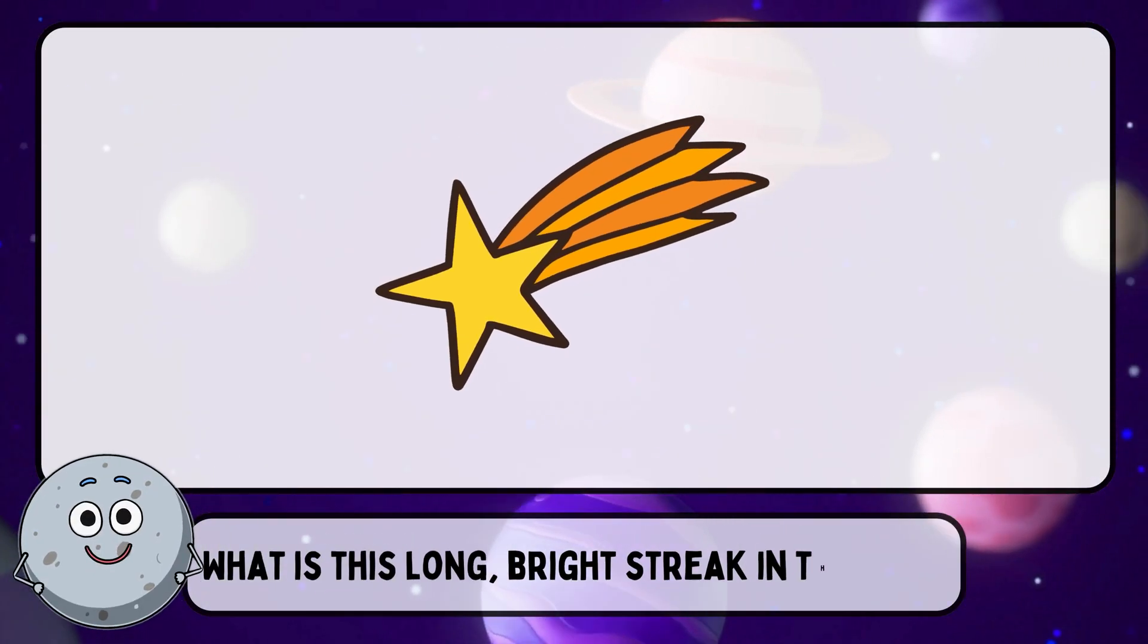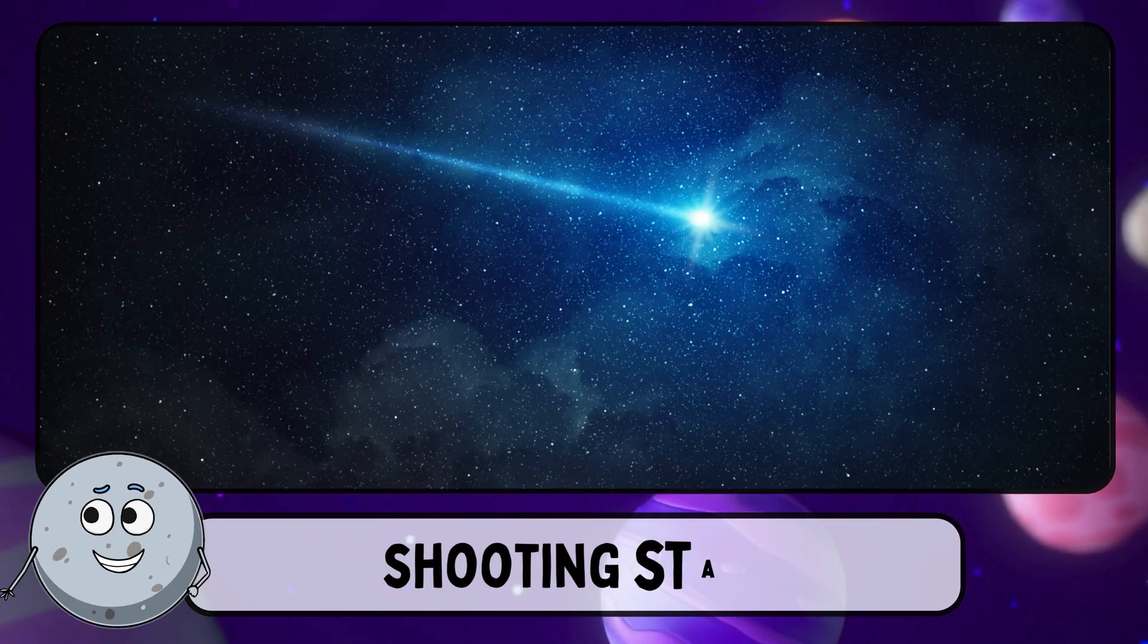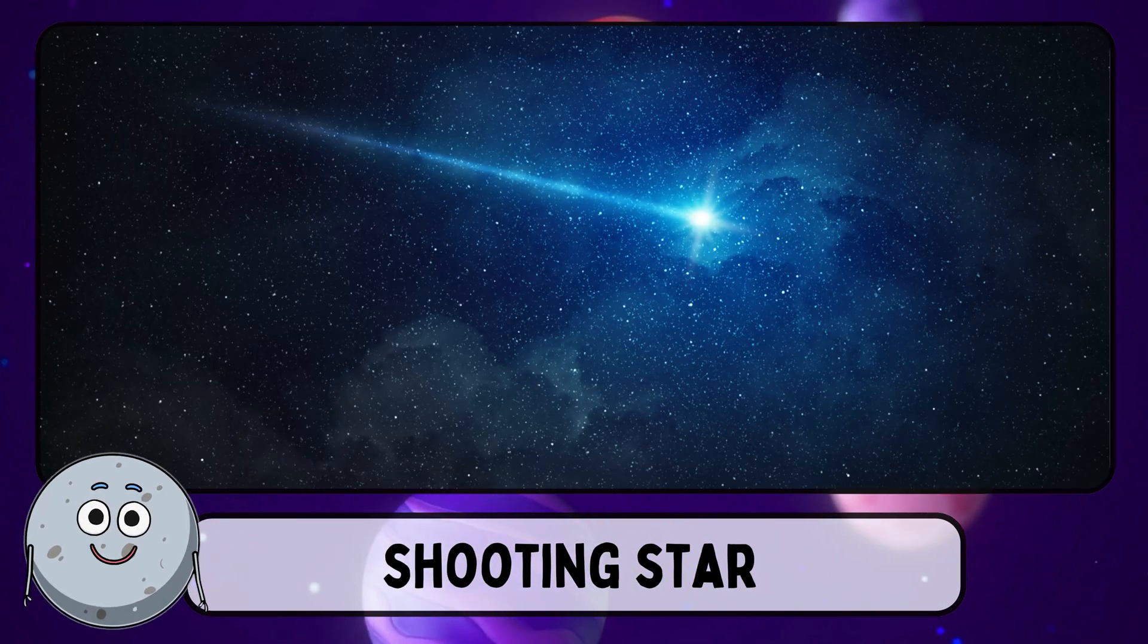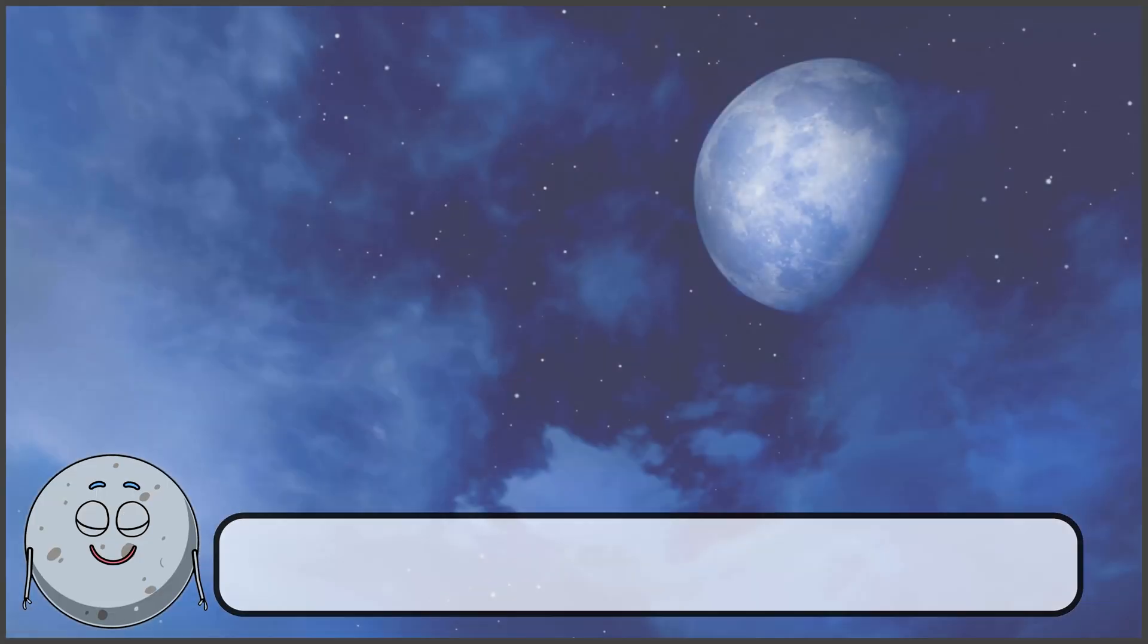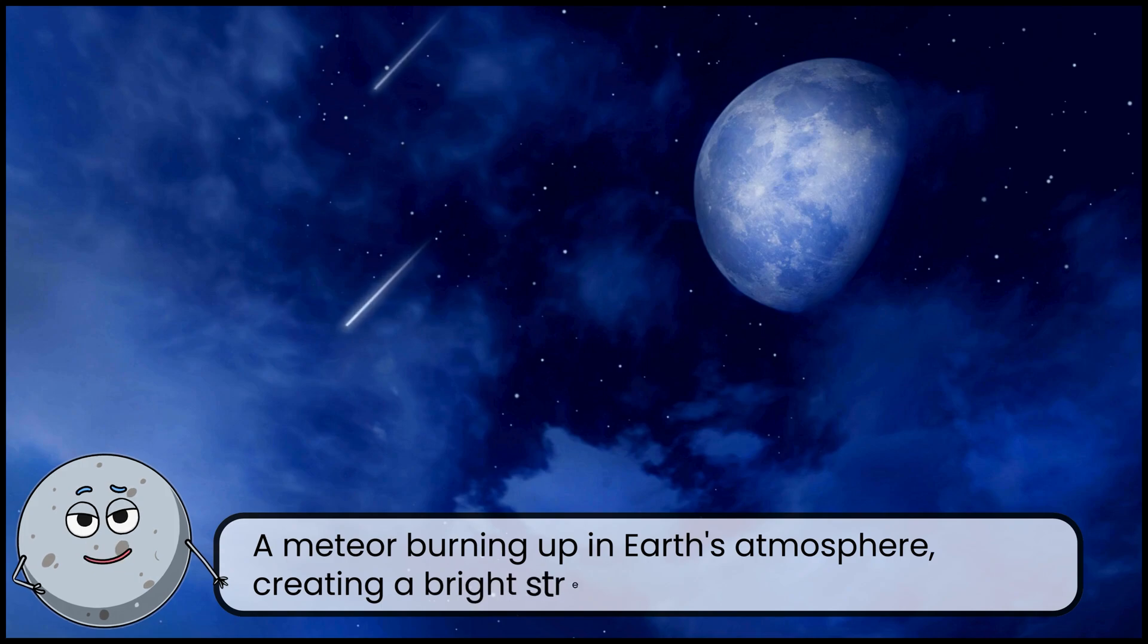What is this long, bright streak in the sky? This is a shooting star. A meteor burning up in Earth's atmosphere, creating a bright streak.